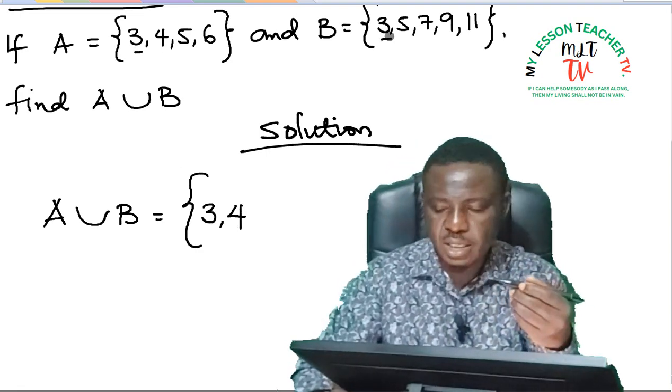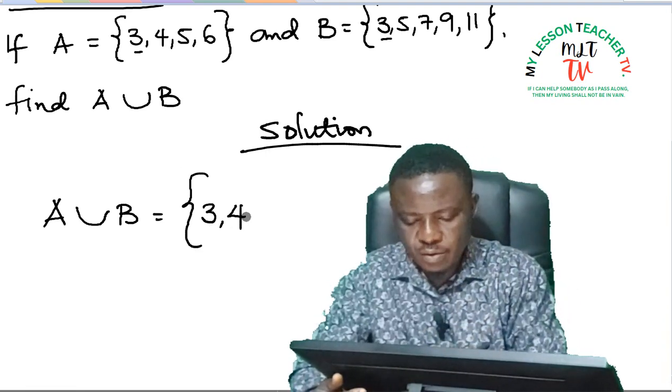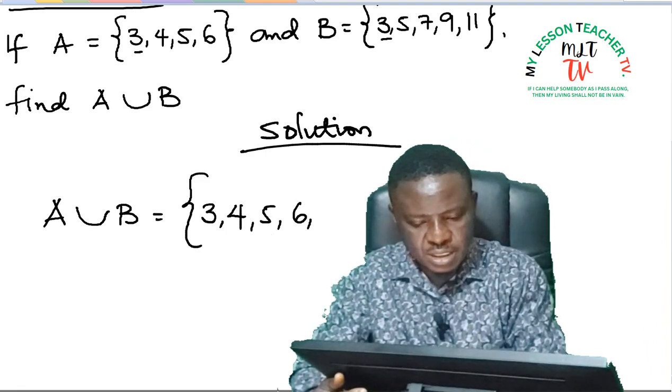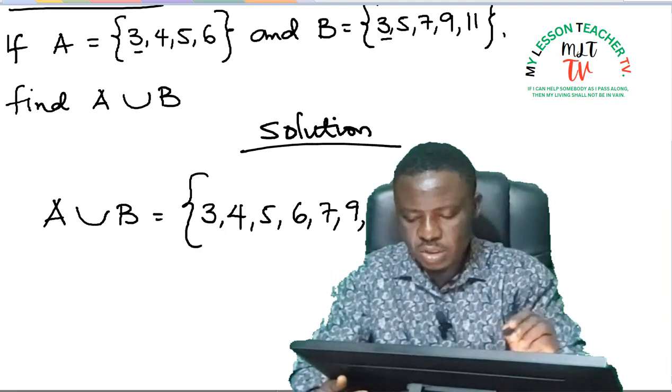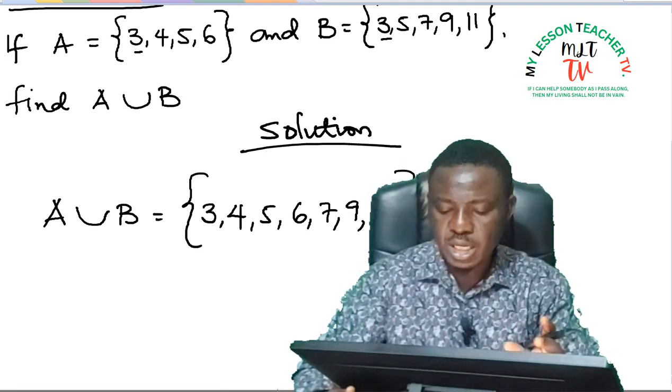Now because we have 3 here and here doesn't mean I should write it twice, but rather just once. We have 3, we have 4, we have 5, we have 6, 7, 9, and 11. So this is said to be the union of two sets and this can be represented graphically.